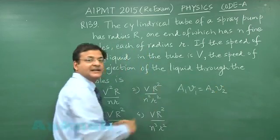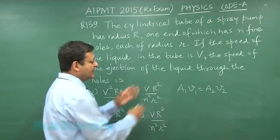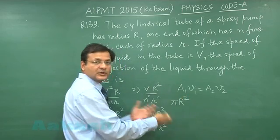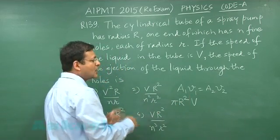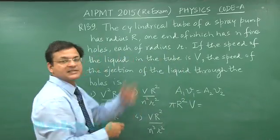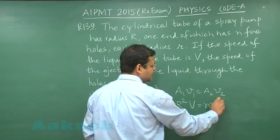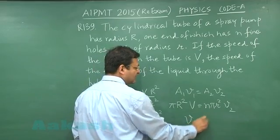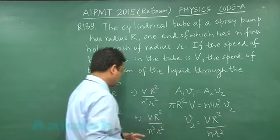One end has radius R, so area is πR² and the velocity is v. The other end has n fine holes each of radius r, so area = n·πr². Solving for v2, we get v2 = vR²/(n·r²). This is the expression we obtain.